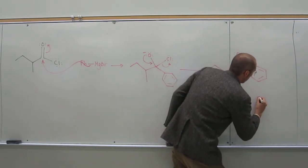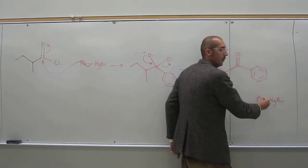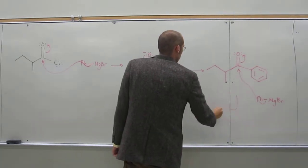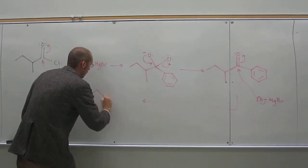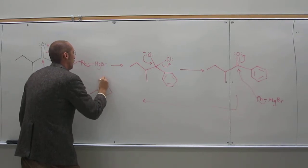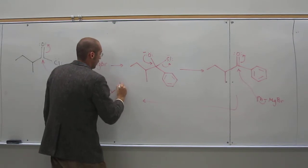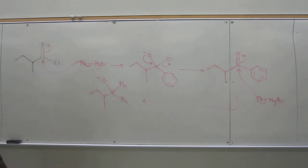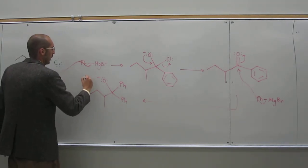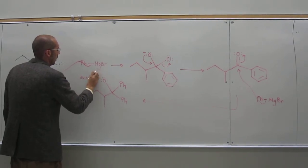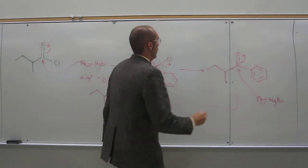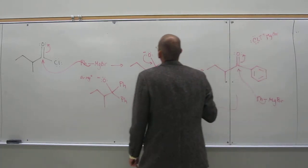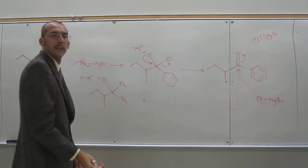Why do we have two of them? Because we said excess. So it's going to attack that carbonyl carbon again. I'm just going to write Ph. So we get that, and then we've got the MgBr plus as the counterion.